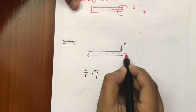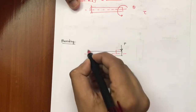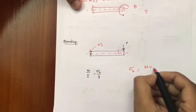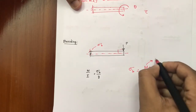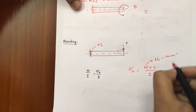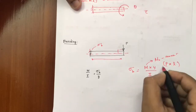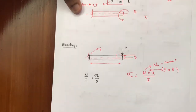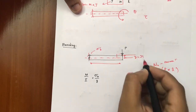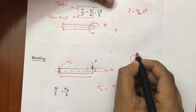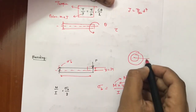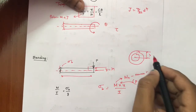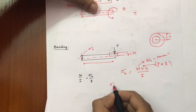For bending stress, when you apply a load perpendicular to the axis, bending stress is generated. Using the bending equation: σ = M·y / I, where M is the bending moment (applied load times perpendicular distance), y is the distance from the outermost layer to the neutral axis, and I is the moment of inertia. For a hollow shaft, y is the distance from the axis to the outermost layer, not the inner radius.